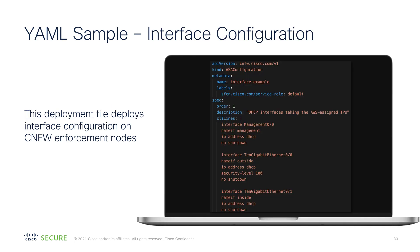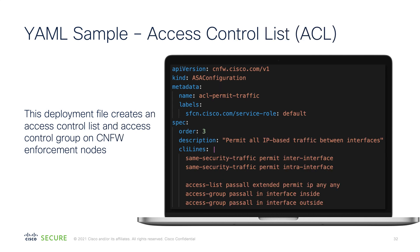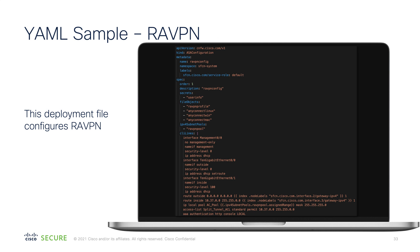Here is a sample configuration file for interface configuration. In this file I have management interface, outside, and inside, all using DHCP. You can add your configuration into this YAML file. This is how you create your objects using YAML — here is a sample for a network object, a sample for an access control list or ACL, and then a YAML file that can help you configure your RA VPN and enable load balancing.